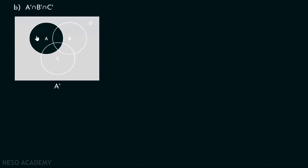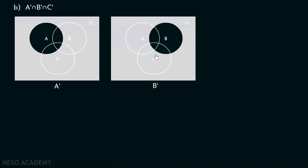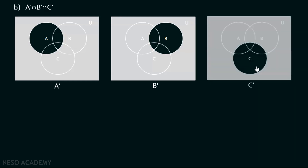What is B complement? Everything except B — every region must be shaded except B. This shaded region represents B complement. Even the universe of discourse must also be included. What is C complement? C complement means everything except C — every region must be shaded except C. And what is A complement intersection B complement intersection C complement? We want to find the common area between A complement, B complement and C complement.